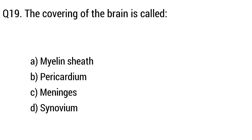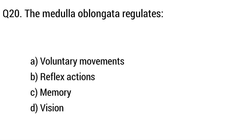Question 19. The covering of the brain is called. Option A: Myelin sheath. B: Pericardium. C: Meninges. The right answer is Option C: Meninges. Question 20. The medulla oblongata regulates. Option A: Voluntary movement. B: Reflex action. C: Memory. D: Vision. The right answer is Option B: Reflex action.